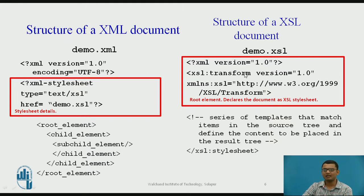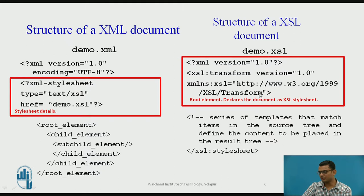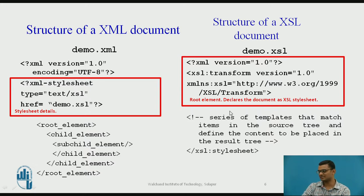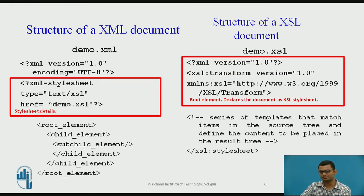My XML file has been defined, and I create a new file with the .xsl extension which has the root element and declares the document as an XSL style sheet. Every XSL document starts with two predefined statements: first, that it is an XML file; and second, it points to the namespace on the W3.org website, which states that the styling details have been included in this file. The series of templates that match items in the source tree and define the content to be placed will be given here, and we end it with the XSL closing end tags.